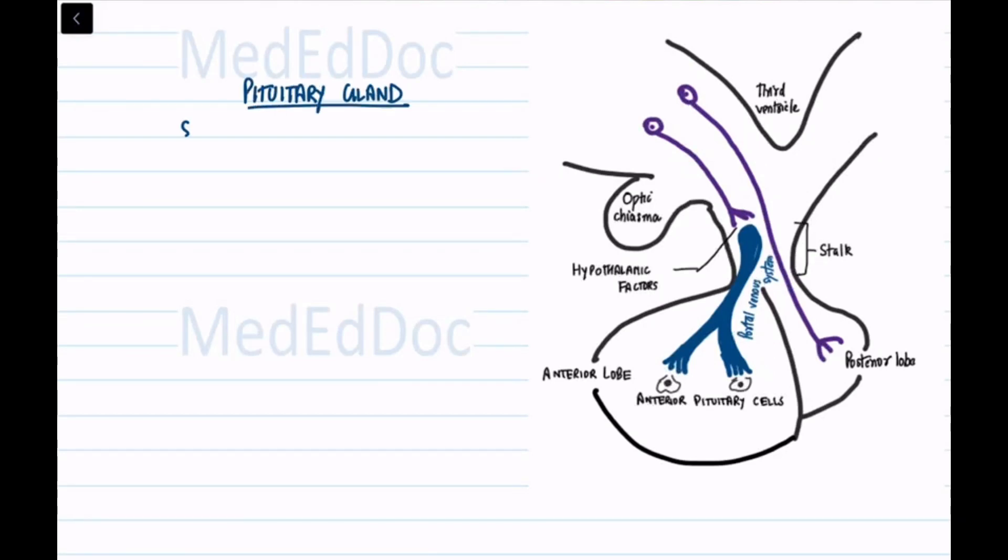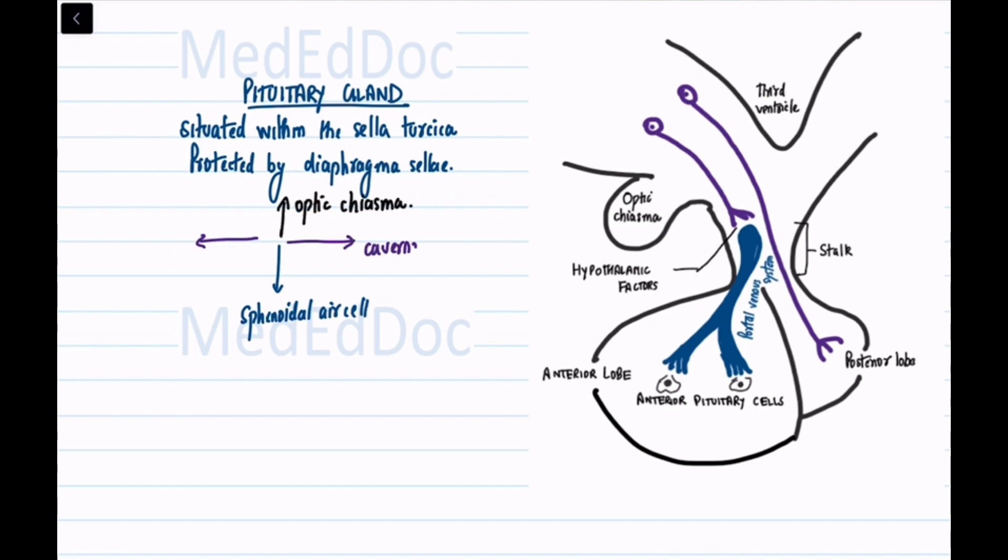The pituitary gland is situated within the sella turcica and is protected by the diaphragma selli. It is closely associated with the sphenoidal air sinuses below, the optic chiasma above, and the cavernous sinuses on the sides.